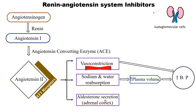Finally, aldosterone is secreted from the adrenal cortex, which is located above each kidney. Increased secretion of aldosterone leads to increased sodium and water reabsorption, which increases plasma volume and overall blood pressure.